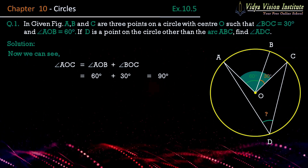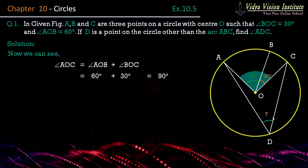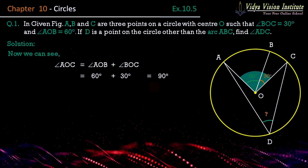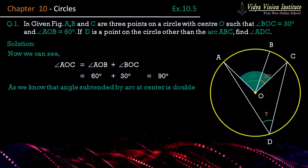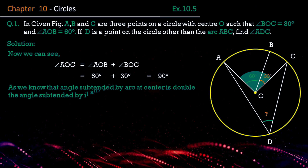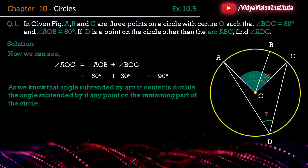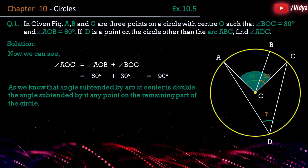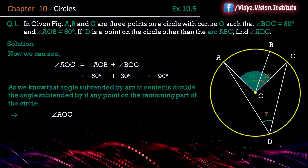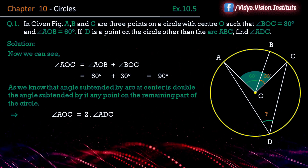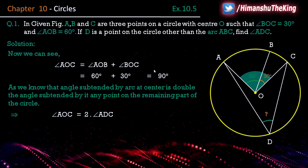Jaisa ki hum theory ke video mein padh chuke hain, as we know that the angle subtended by an arc at the centre is double the angle subtended by it at any point on the remaining part of the circle. Yeh angle jo hoga woh is angle ke two times hoga. Therefore angle AOC is equal to two times angle ADC.